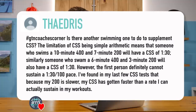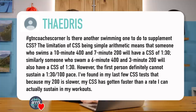Let's get straight into your questions. Starting with Theadris, who asks: is there another swimming test to do to supplement critical swim speed? The limitation of critical swim speed being simple arithmetic means that someone who swims a 10-minute 400 and a 7-minute 200 will have a critical swim speed of 1:30.